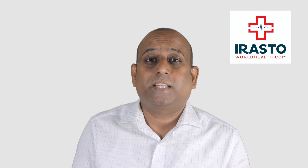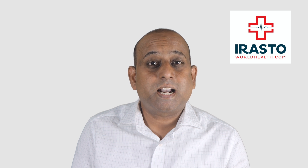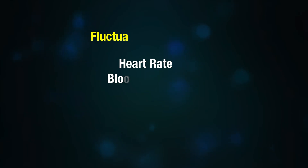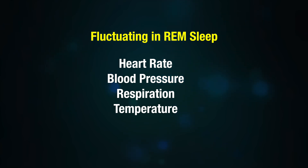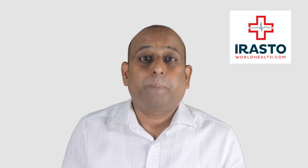That is, your brain is active and you are still in deep sleep. Your muscles twitch, and dreams and nightmares occur in REM sleep. Other vitals that are fluctuating include heart rate, blood pressure, respiration, and body temperature.